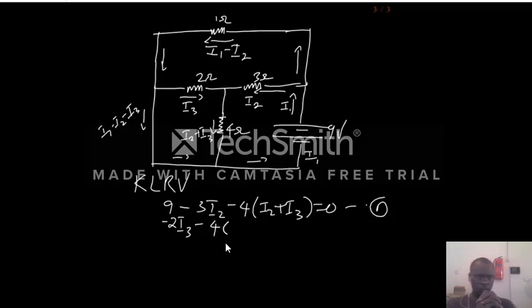And also loop and current in the same direction, we have minus 4 into I2 plus I3. Remember we are going to ignore any current with no resistance going in line of zero resistance.